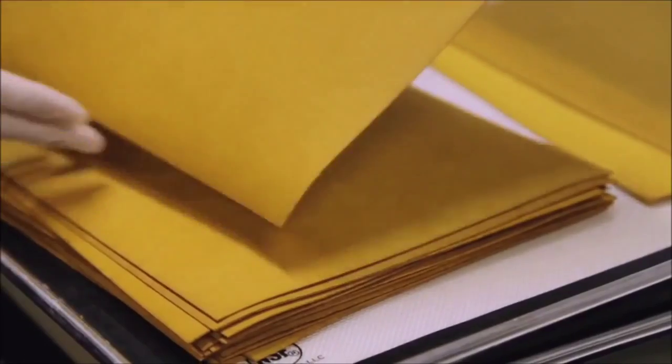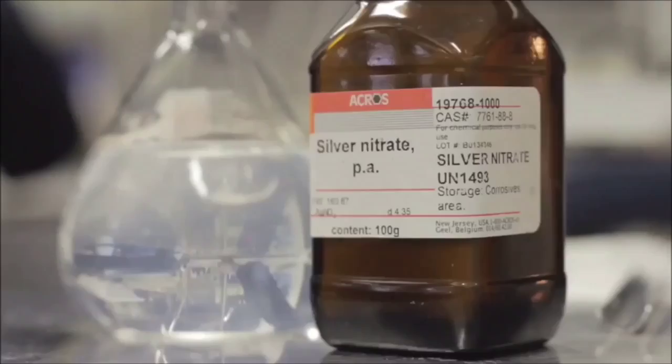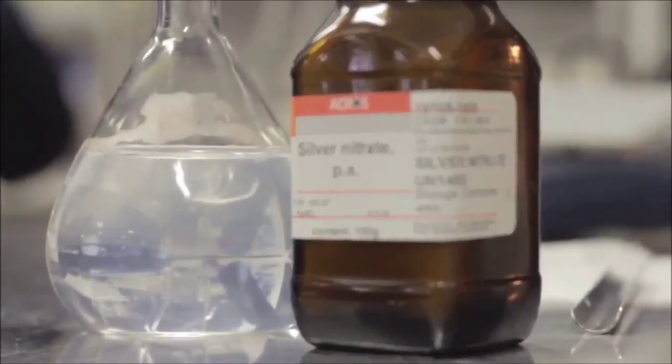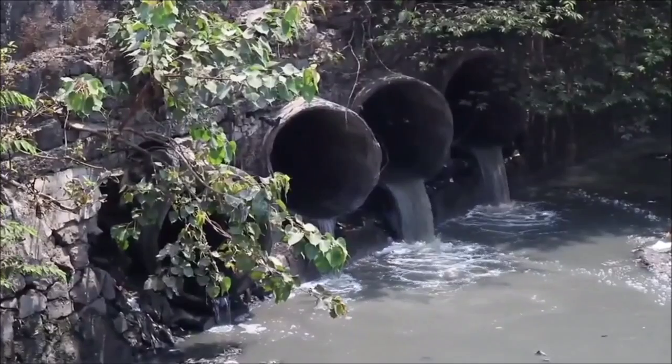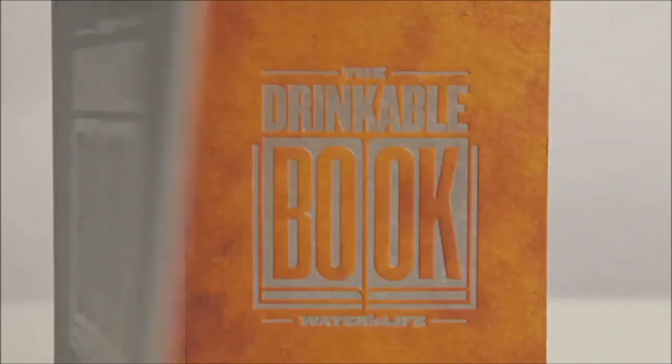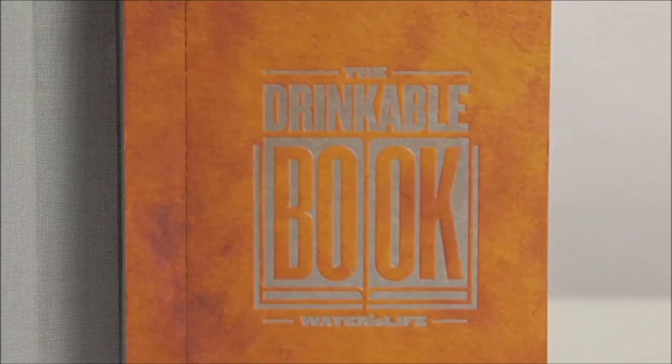The book uses a brand new type of paper that works like a scientific coffee filter. Each piece is coated with silver nanoparticles, which kill diseases like cholera, E. coli and typhoid. The orange color of the paper is a direct result of the addition of the silver nanoparticles.